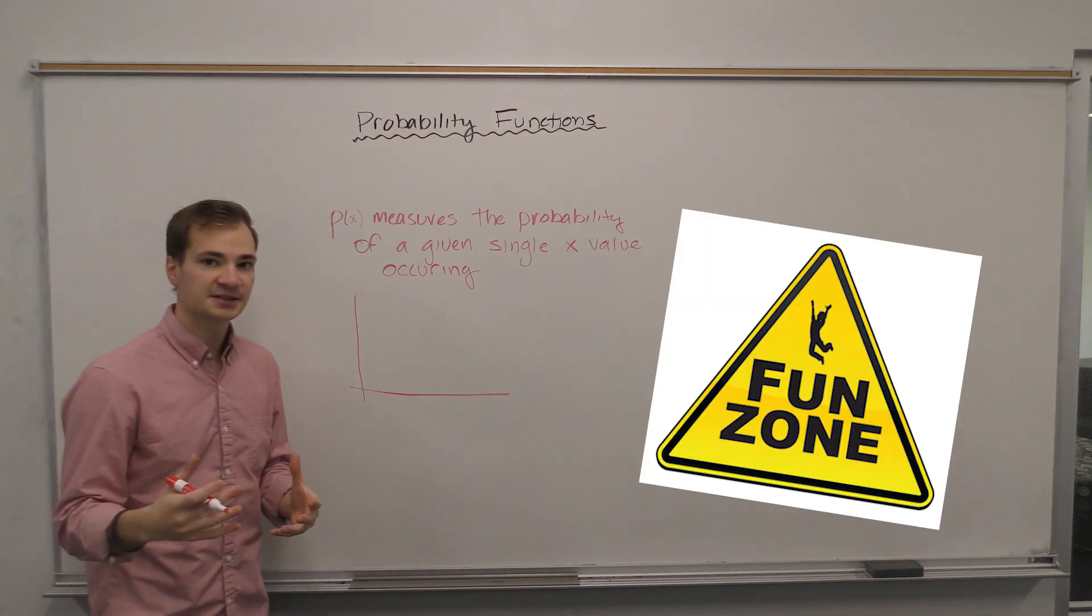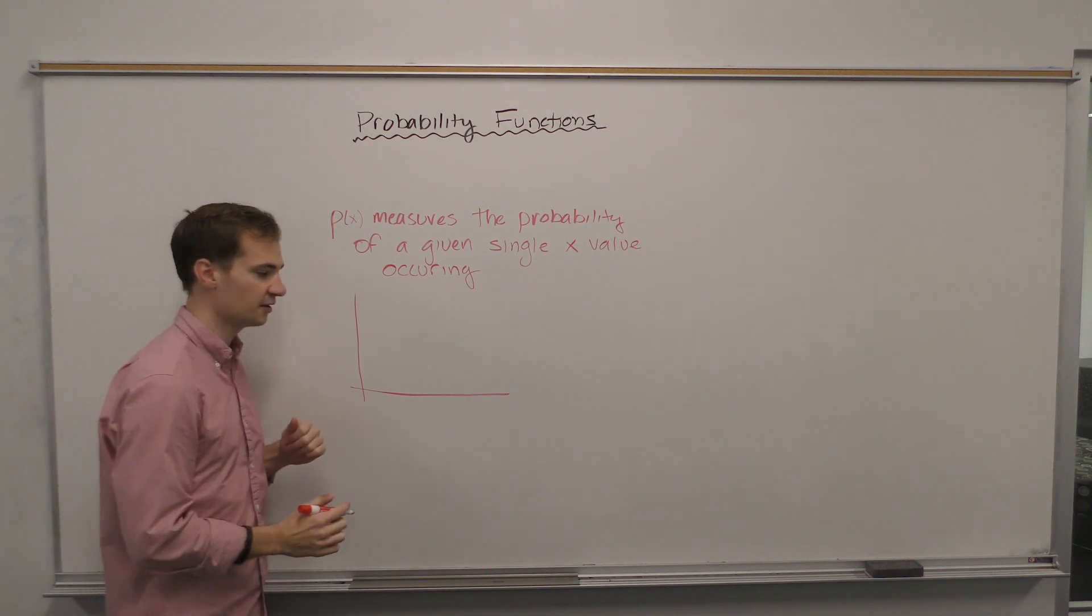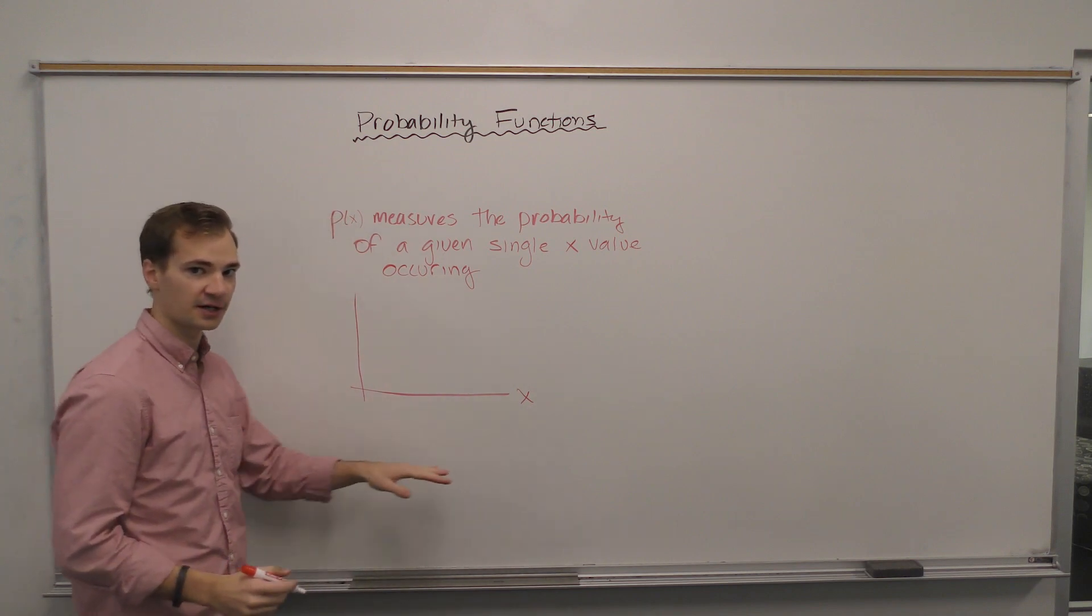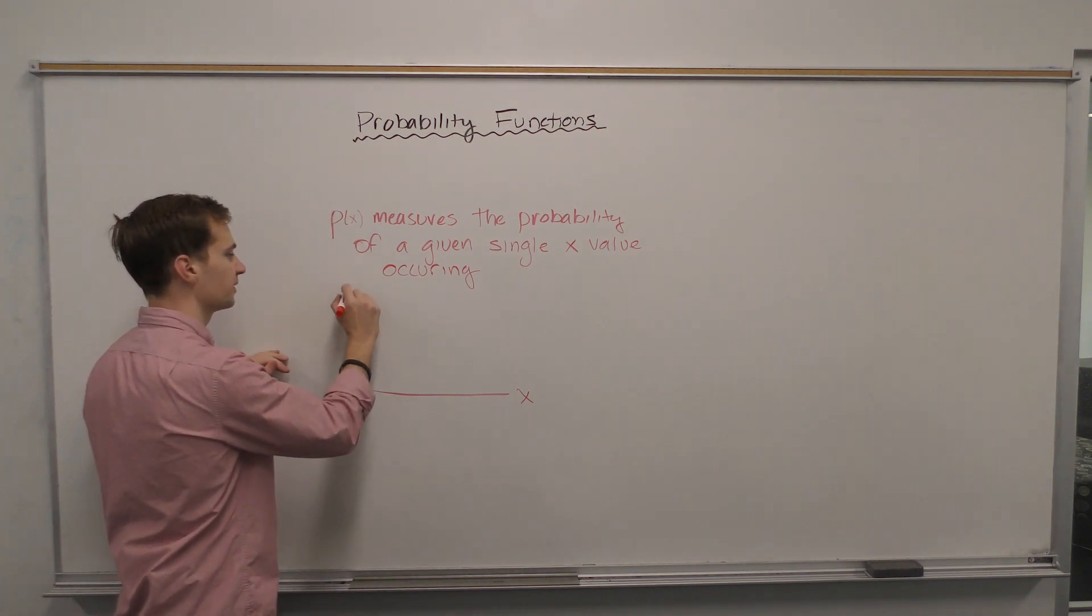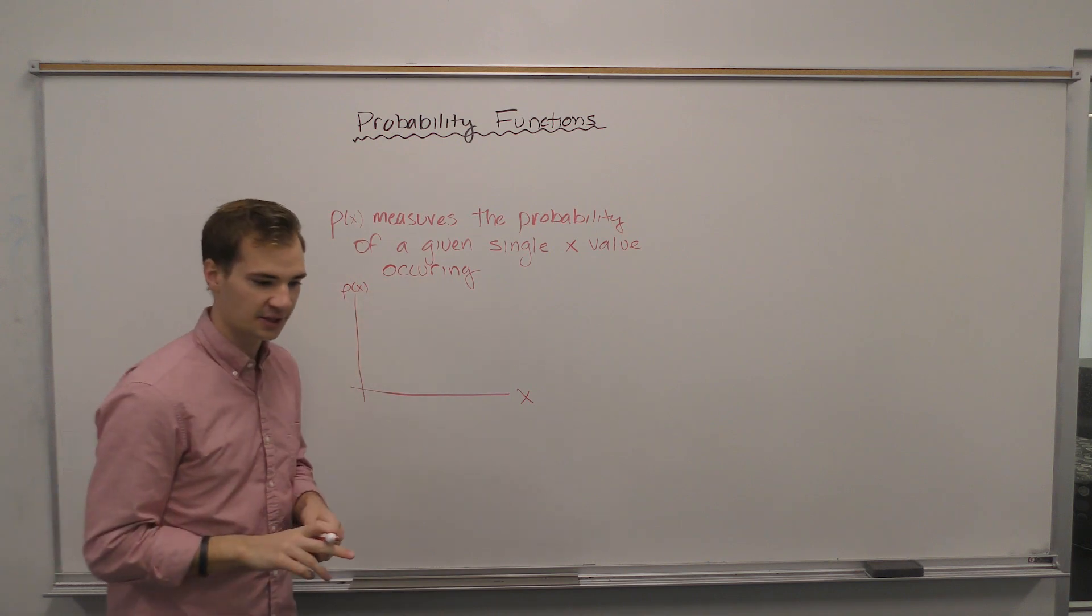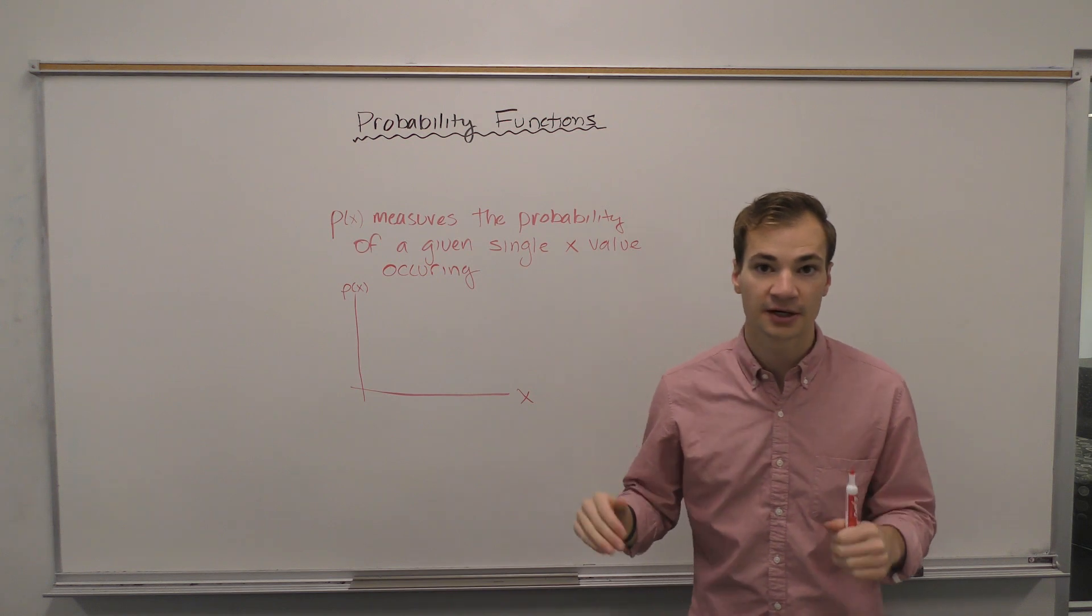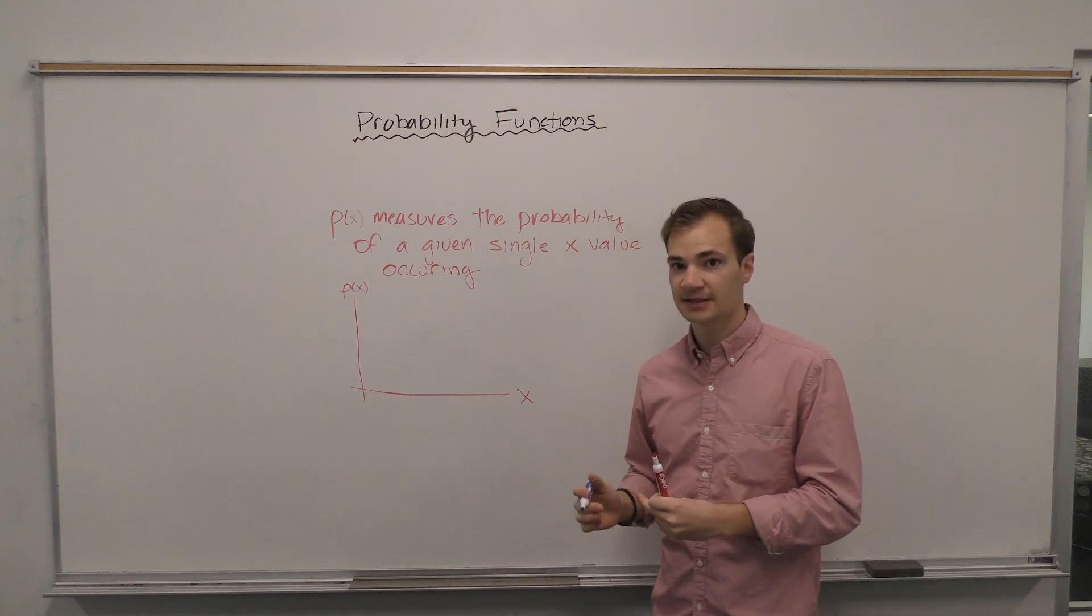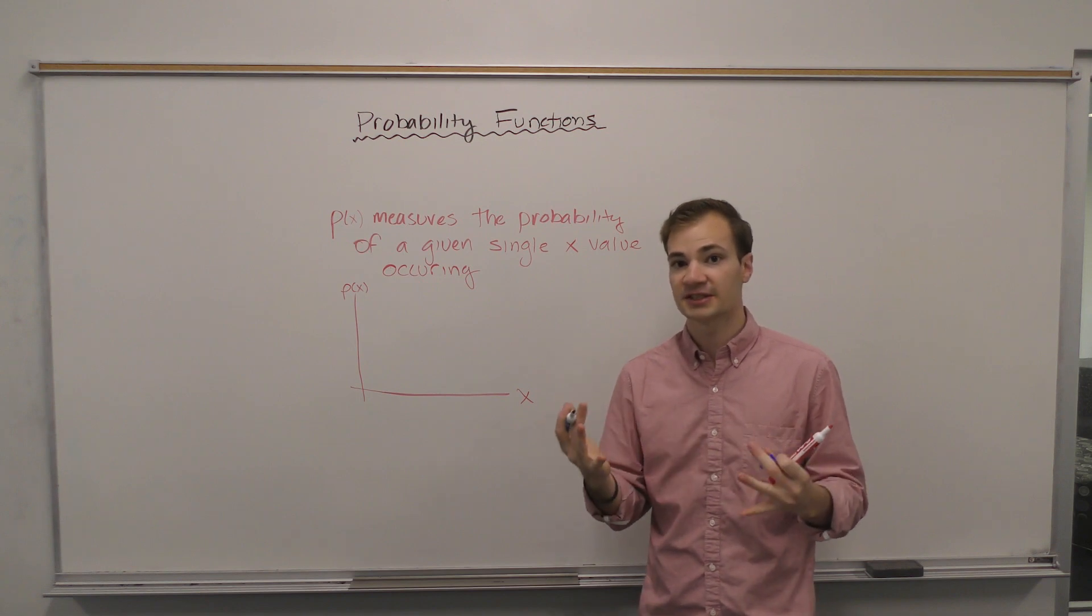Now because it acts as a function, we're going to graph it the same way with our input or random variable on the horizontal axis and our measurement, our probability, on the vertical axis. Now let's take an example of rolling a dice. The probability that I roll a one on a dice is one out of six different sides.